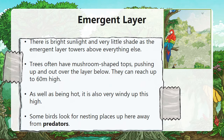Now let's look at the emergent layer in more detail. There is bright sunlight and very little shade as the emergent layer towers above everything else. Trees often have mushroom-shaped tops pushing up and out over the layer below, and they can reach up to 60 meters high. As well as being hot, it is also very windy up this high. Some birds look for a nesting place up here, away from predators.